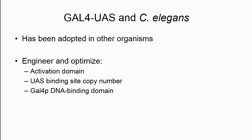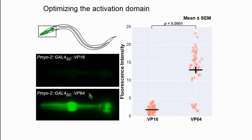GAL4 has been adopted by many organisms, but not C. elegans. We wanted to engineer and optimize the system for use in C. elegans. We looked at a few things: the activation domain, which recruits transcriptional machinery; the UAS copy number; and the GAL4 DNA binding domain.